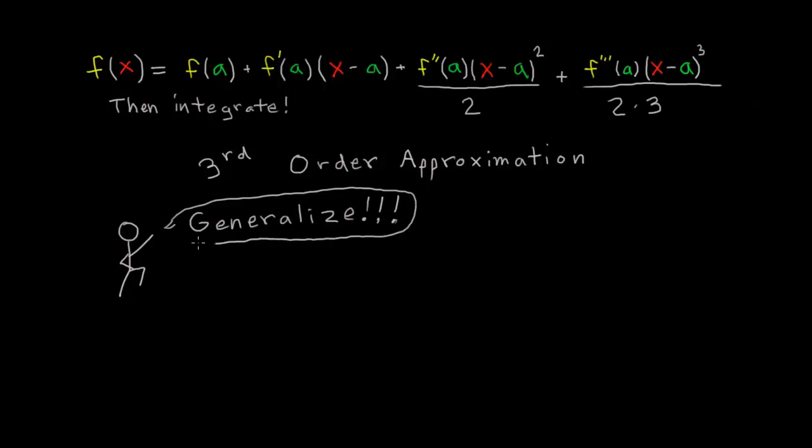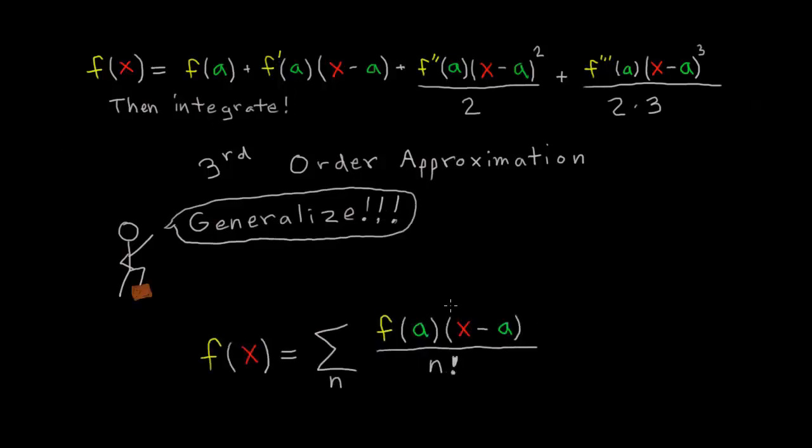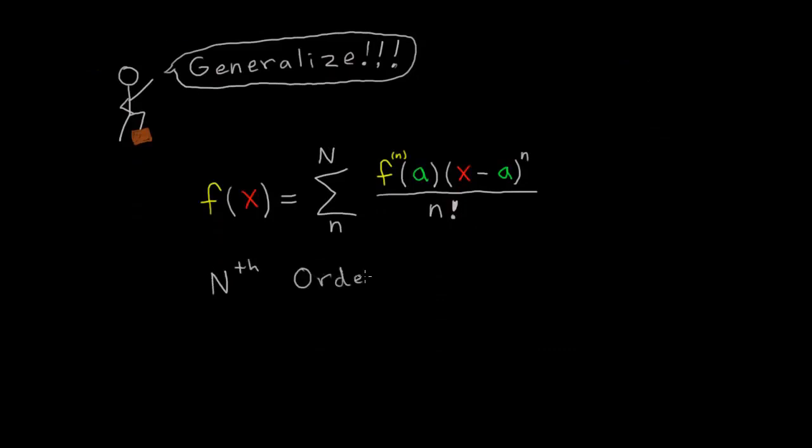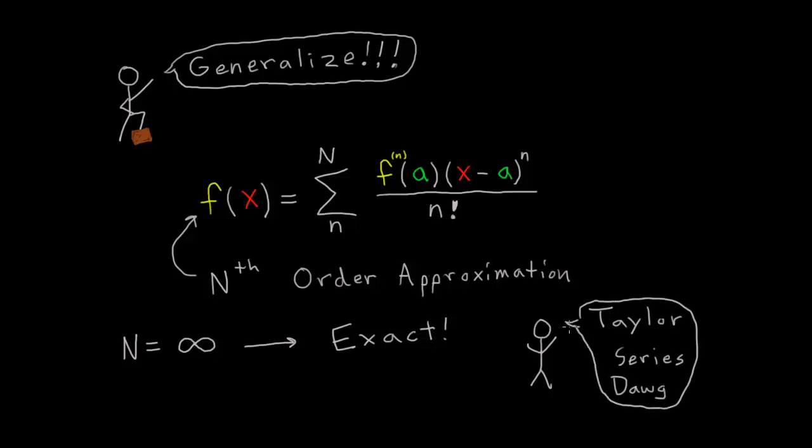But now Taylor definitely sees a pattern. In fact, Taylor can approximate a function as accurately as anyone could want, just by adding up terms that follow this pattern. And if Taylor has enough time to add up an infinite number of terms, the approximation becomes exact. And just like that, Taylor is a famous mathematician.